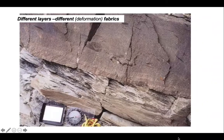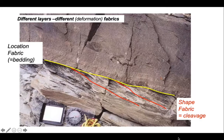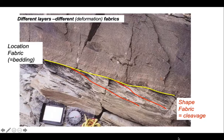Here's another example, perhaps more classic, which is a sandstone-siltstone couplet. We can see the location fabric running across there, which is bedding, and the shape fabric below, which is actually a cleavage formed within the finer-grained siltstones below but not in the sandstone on top.